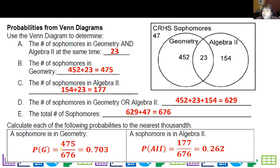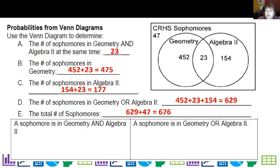Now the probability of sophomores in Geometry is basically that 475, coming from these two, over 676, which is 0.703. The probability of sophomores in Algebra 2 is I have to combine these two, which gives me 177, over 676, or 0.262. So now the probability of sophomores in Geometry and Algebra 2, that would only be those 23 right here in the center. So it would be 23 over our total, which is 676, or about 3.4%.